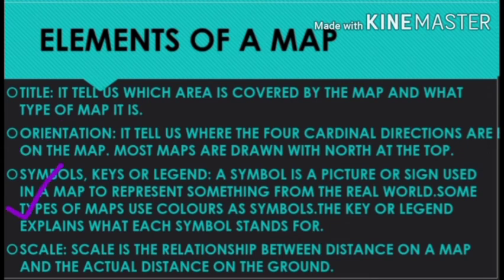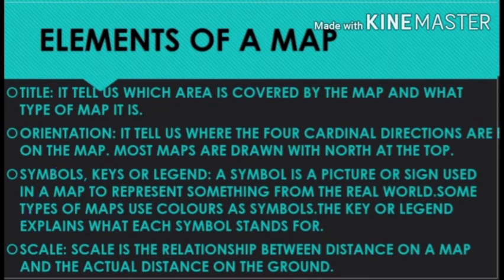The next element is symbols, keys, or legend. A symbol is a picture or sign used in a map to represent something from the real world. Some maps use colors as symbols — for example, blue for ocean and red for a bridge. The key or legend explains what each symbol stands for.